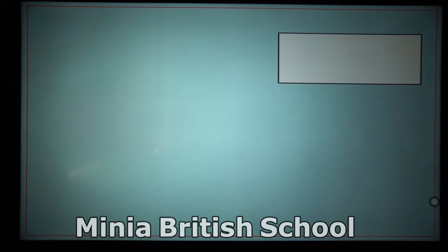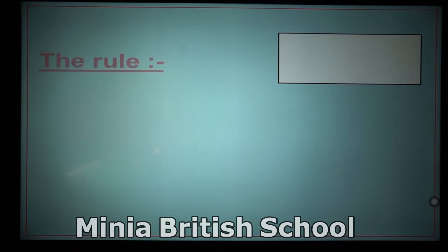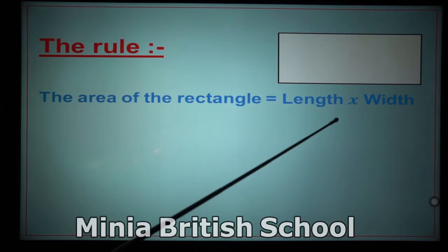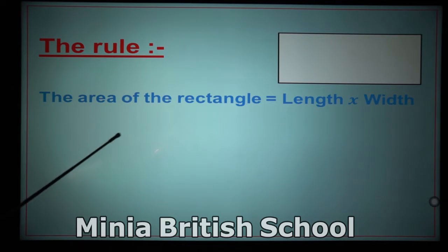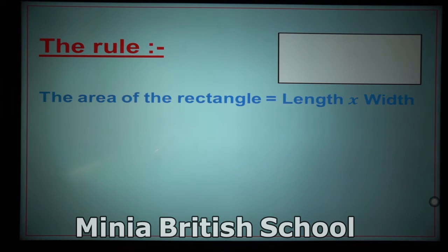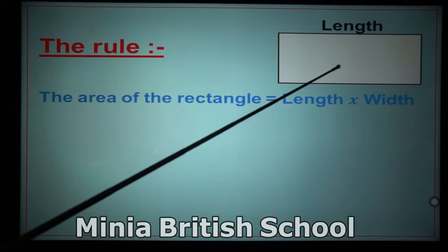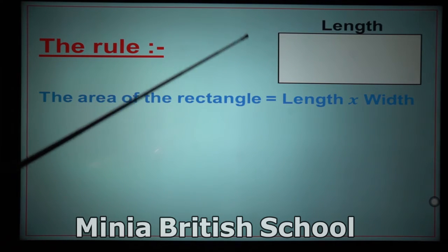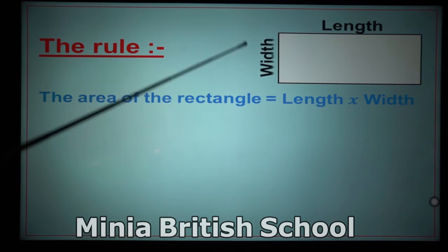16 square centimeters — because centimeter times centimeter equals square centimeter. What about this shape? It's a rectangle. Here I have a new rule: the area of the rectangle equals length times width. The longest side is called the length and the shortest side is called the width.